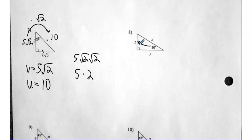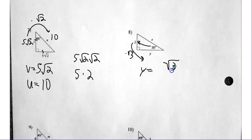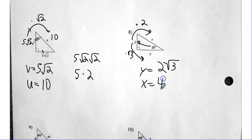Number eight — I have the short leg. I'm going to the long leg first, which means I'm going to multiply by radical three. So I just take radical three and tack it on the two. And then how do I go from the short leg to the hypotenuse? I'm getting bigger and I double it. So X is two times two, which is four.